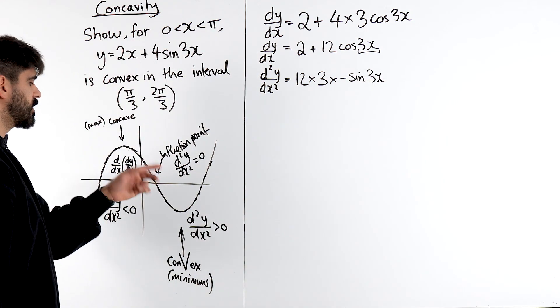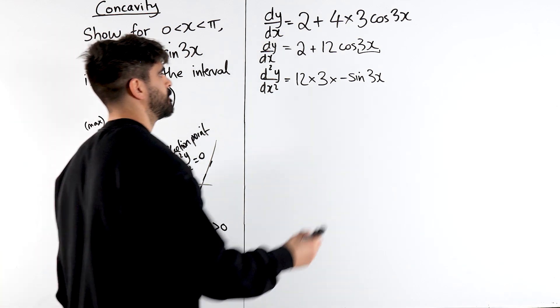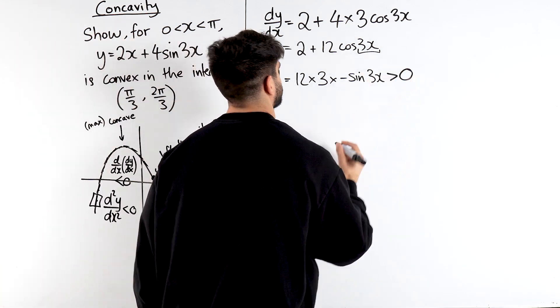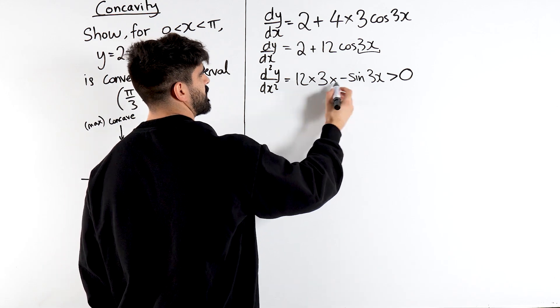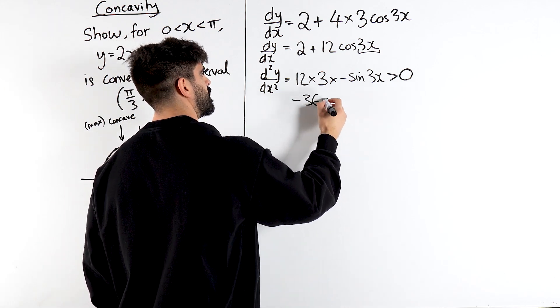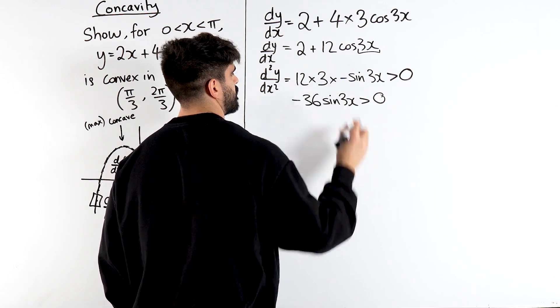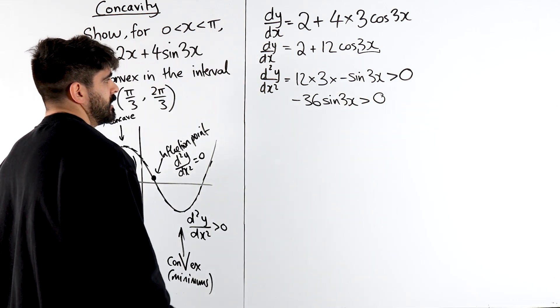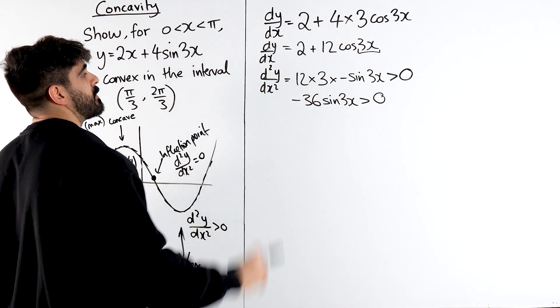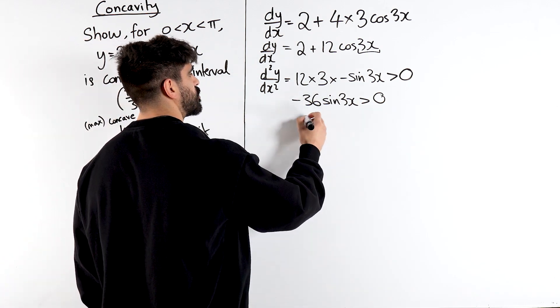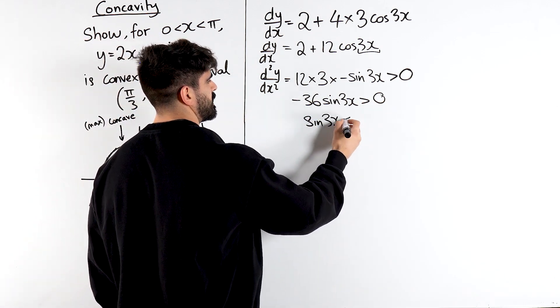Okay? Now we want to know when that is bigger than 0. So here we get, what is that? -36sin(3x) > 0. Well, we're going to divide by -36 which is going to change the region to actually be less than 0.